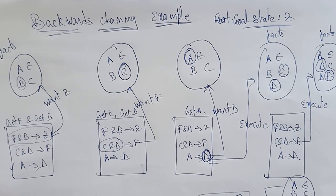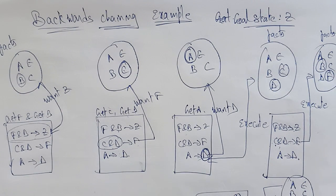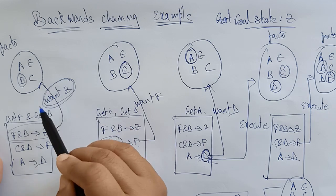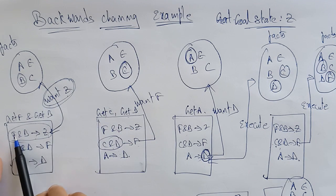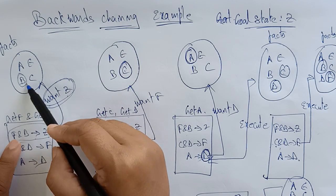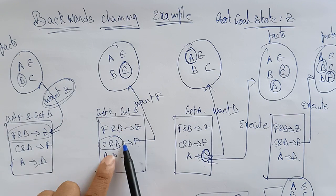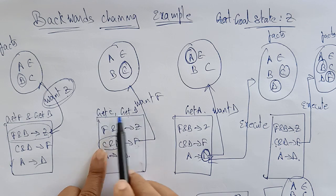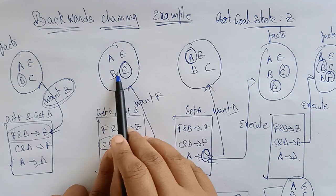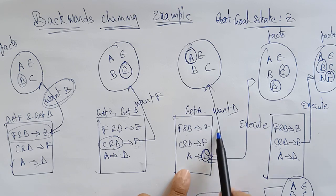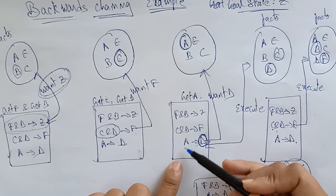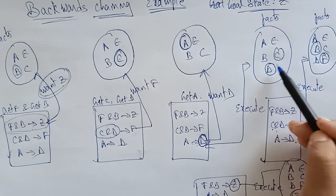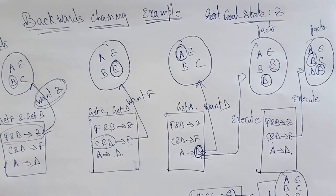So this is the process of backward chaining. Just like forward chaining, here with the help of the goal I want Z, so I check F and B — B is already there, I don't have F. Next I request F; where is F on the right-hand side of a rule? So get C and D — C is already present, D is not, so I ask for D. Once all elements are verified I execute D into the facts, and the process continues until the goal is reached. Thank you.